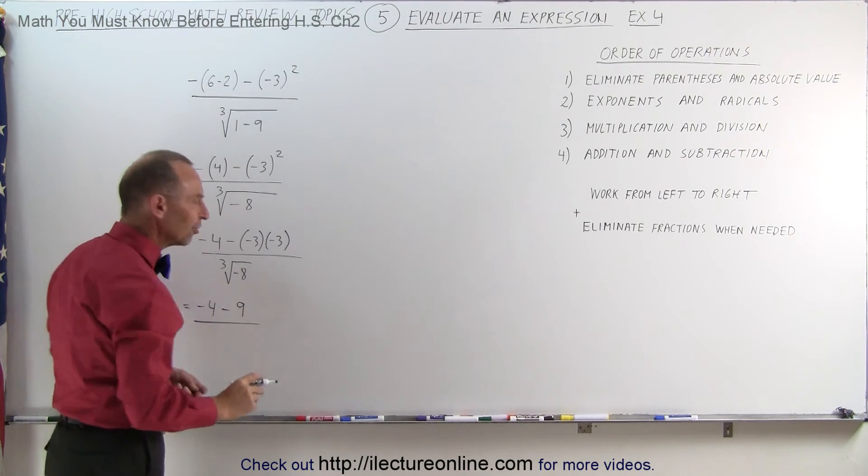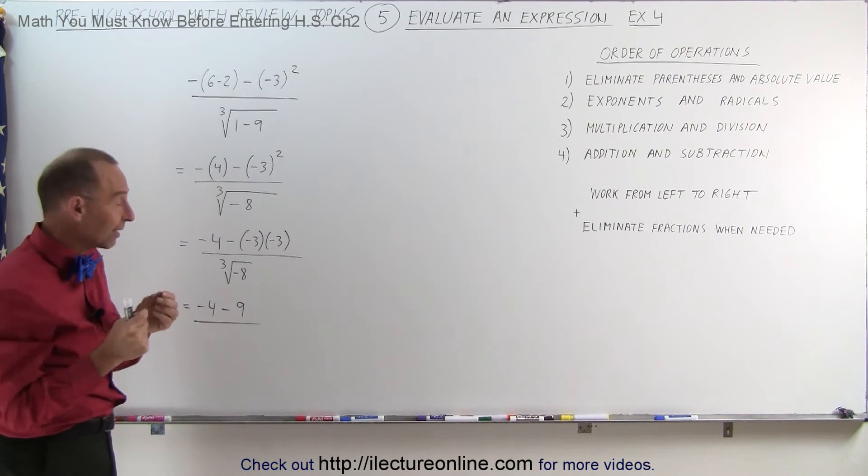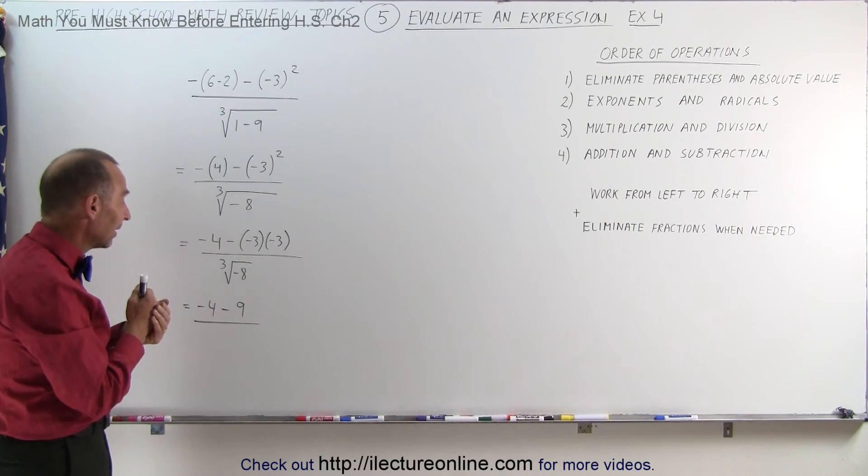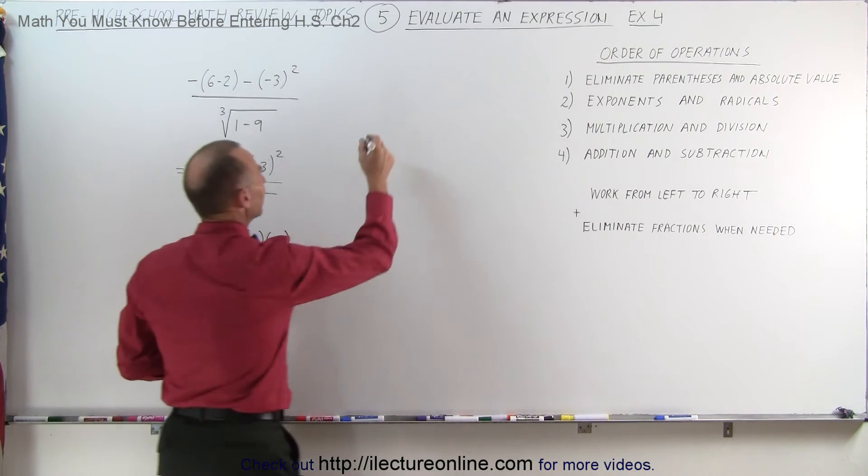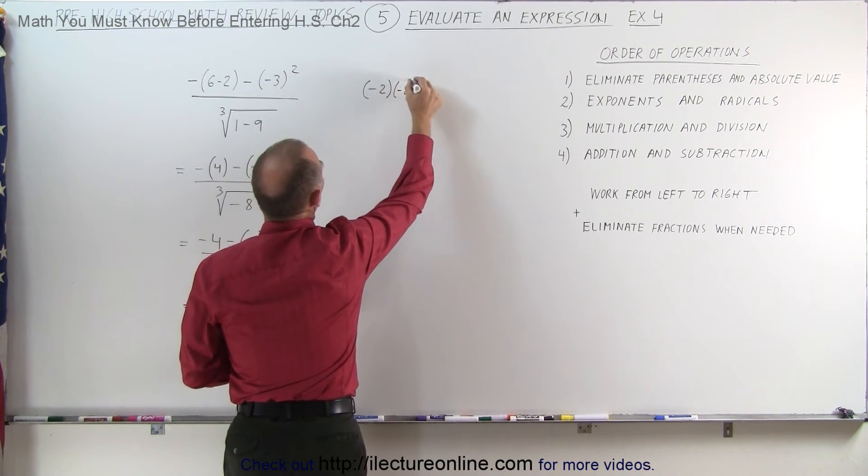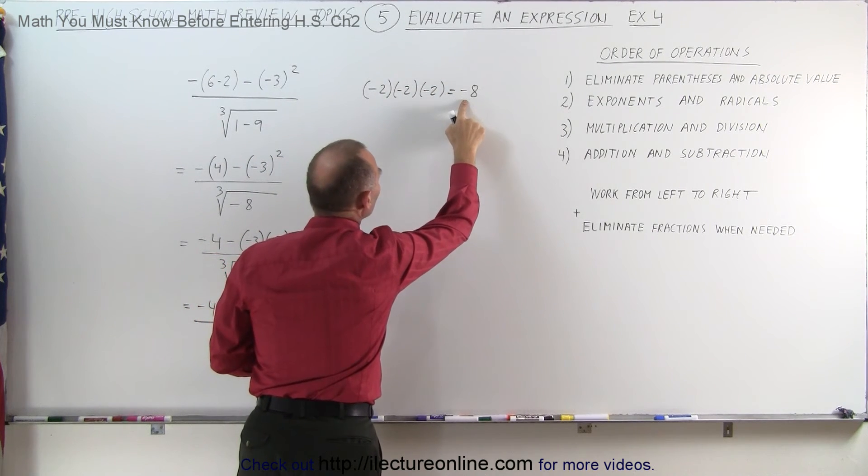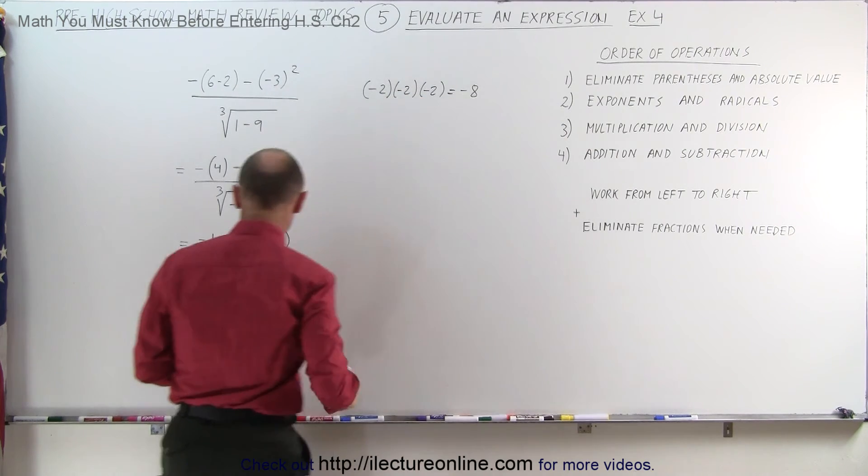Divided by, what's the cube root of minus 8? Well, I'm looking for a number when I multiply it by itself 3 times, I get negative 8. So I believe this number will do the trick. Negative 2 times negative 2 times negative 2 is equal to negative 8, which means the cube root of negative 8 is equal to negative 2.